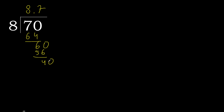Complete — point. 40. 8 multiplied by 5 is 40. Subtract — 0. Therefore finished: 70 divided by 8 equals 8.75.